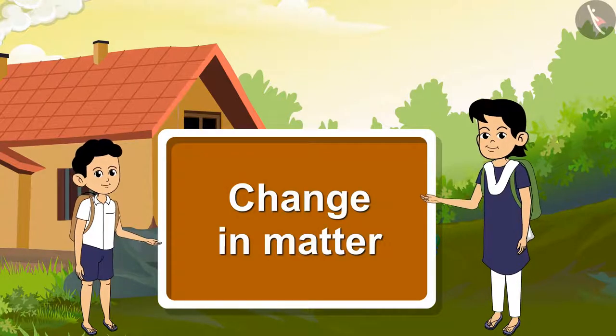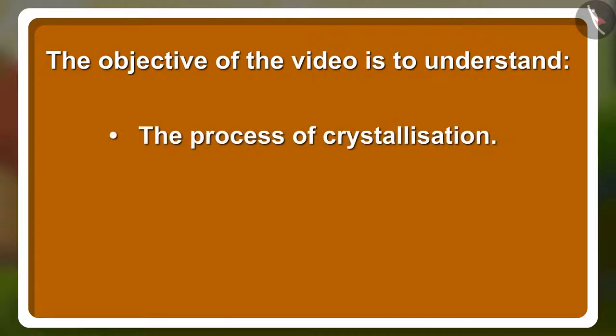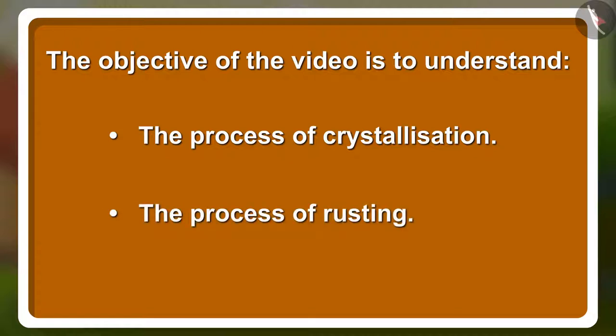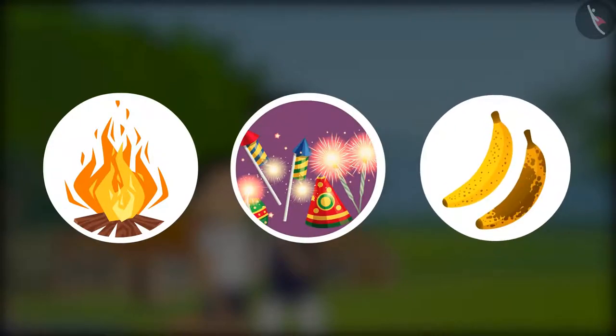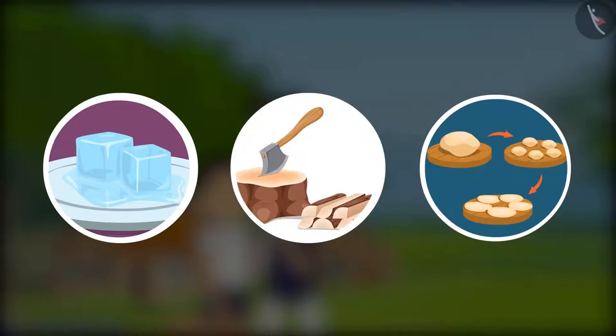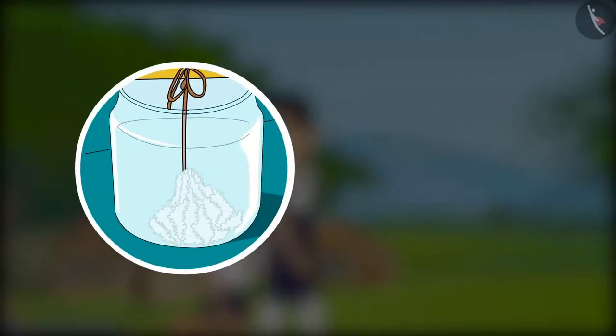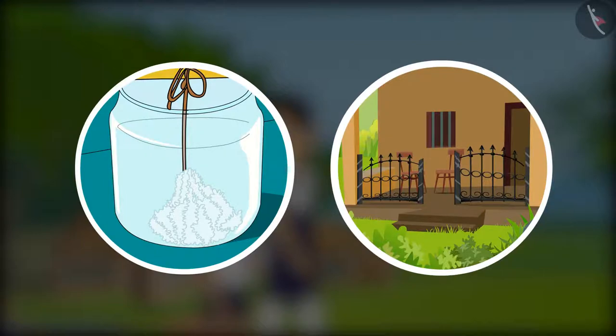The objective of this video is to understand the process of crystallization and the process of rusting. In the previous video, you learned about chemical changes and examples associated with them. Chemical changes are permanent and physical changes are temporary. In this video we will learn about the process of crystallization and rusting.